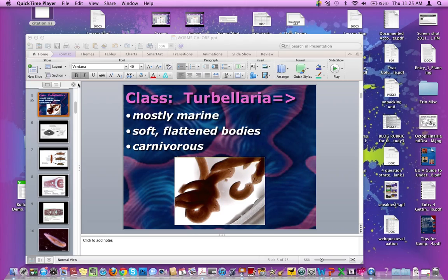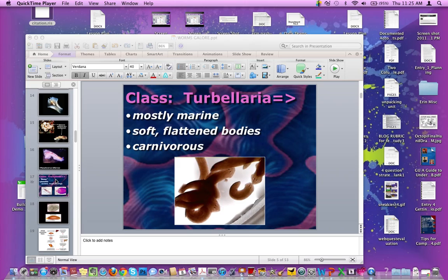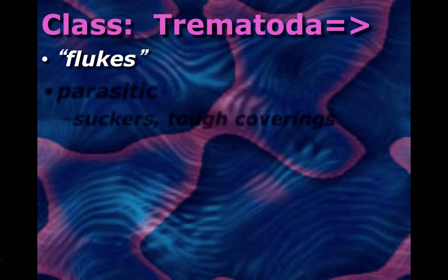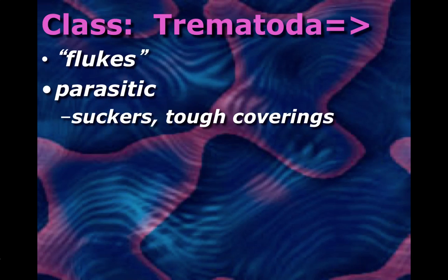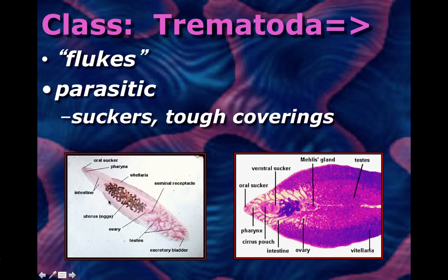Trematodes are another group of flatworms — these are our flukes. Flukes are a group that is entirely parasitic; you will not find any that just live on their own. They rely on a host to survive. As part of their parasitic lifestyle, they have suckers and a tough outer covering. The suckers allow them to latch onto their host — whether it's the intestine or the lungs — and the tough outer covering protects them from the host's immune system. When you look at a picture of a fluke, you can see the sucker where they attach, and the body is made up mostly of reproductive organs — eggs and testes — so the majority of their life is devoted to reproduction.